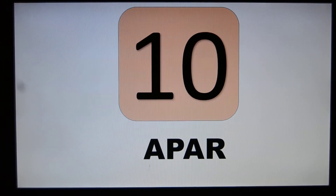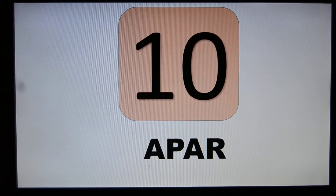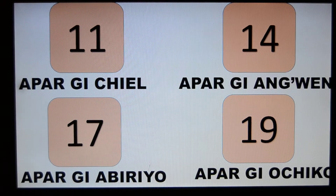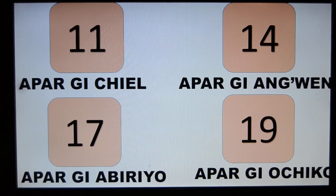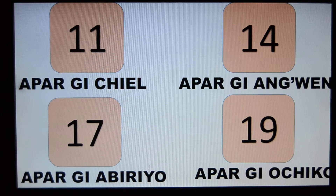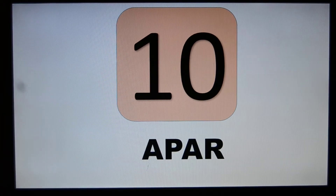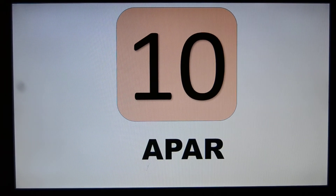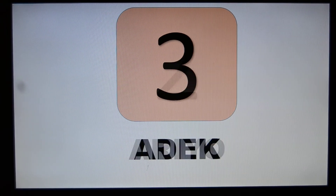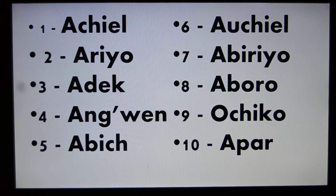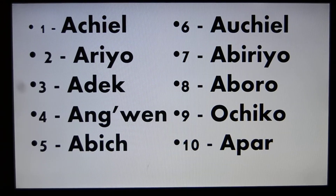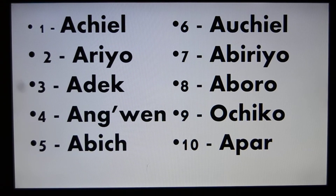Now I want to introduce eleven through to the other numbers. For eleven, we shall take ten and then add one. Ten was a par and one was a chiel. If you look at this, ten is a par and one is a chiel. So for eleven it will be ten and one — that is a par ge achiel.